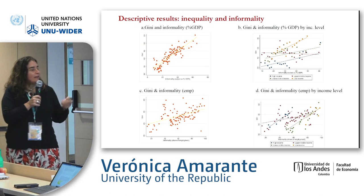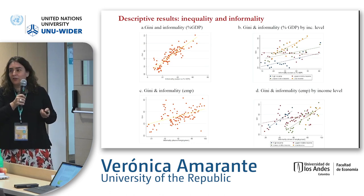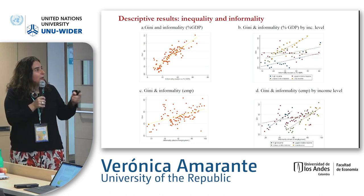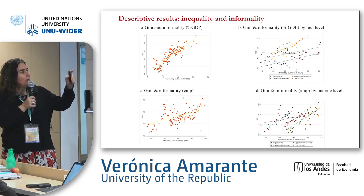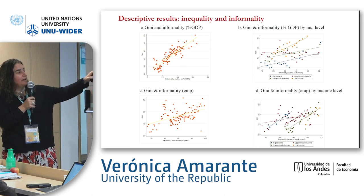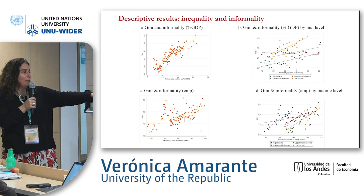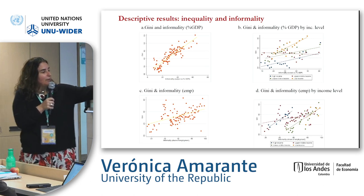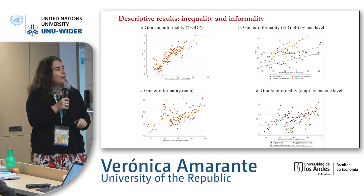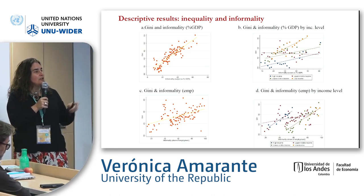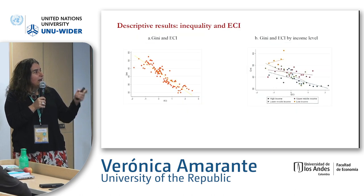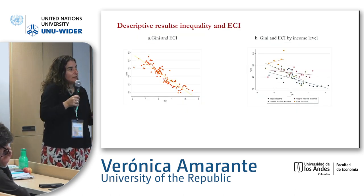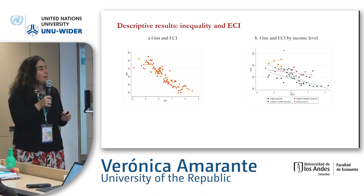Some descriptive statistics: there is a positive correlation between Gini and informality, visible at the world level both with informality in GDP and with employment, though the employment measure is less clear. The same holds in general across regions, with some exceptions. And we also have the correlation between Gini and the economic complexity index — these are just simple correlations — and the negative correlation is not visible for the yellow dots representing low-income countries, where there is a different pattern.